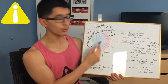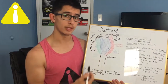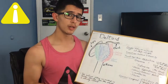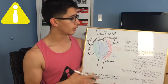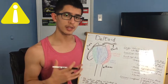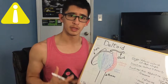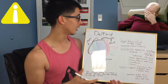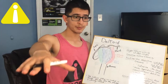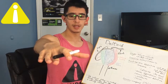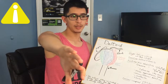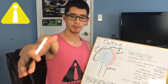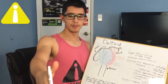Since the deltoid is part of a ball and socket joint, it covers the joint and helps perform all its main movements. Arm abduction is mostly done through the lateral head of the deltoid, but if you do a little bit of internal rotation of the arm you get a greater emphasis on targeting the lateral head of the deltoid.